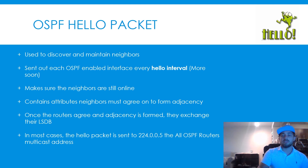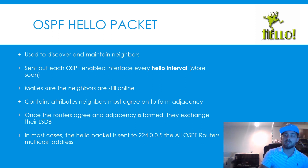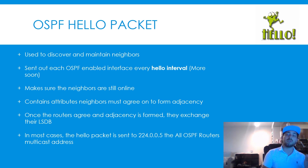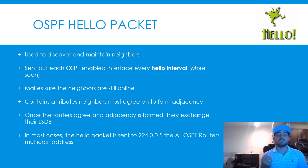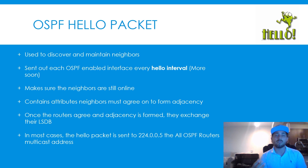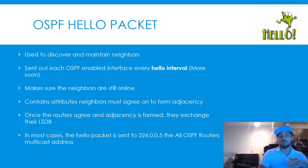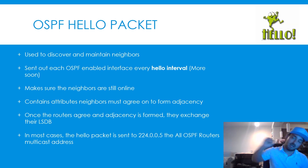If an OSPF router does not receive a hello packet from a neighbor within a set period of time, known as the dead interval, it declares the neighbor down. By default, the dead timer is four times the hello interval — so that's 40 seconds if the hello interval is every 10 seconds. Basically, every 10 seconds you're sending hellos, and if you don't get a hello for 40 seconds, you decide that neighbor is gone.